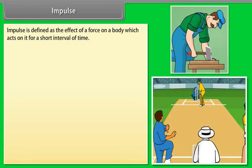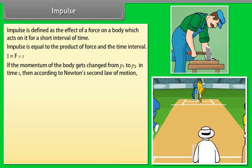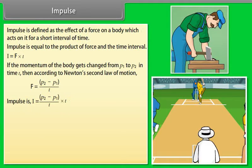Impulse is defined as the effect of a force on a body which acts on it for a short interval of time. Impulse equals the product of force and the time interval: I = F × t. If the momentum of a body changes from p1 to p2 in time t, then according to Newton's Second Law: F = (p2 − p1)/t, so I = p2 − p1 = Δp.